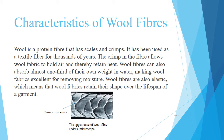Characteristics of Wool Fibers: Wool is a protein fiber that has scales and crimps. It has been used as a textile fiber for thousands of years. The crimp in the fiber allows wool fabric to hold air and thereby retain heat. Wool fibers can also absorb almost one-third of their own weight in water.